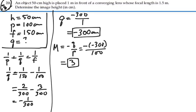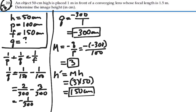So our image should be upright, and it will be 3 times larger than our object. In fact, our image height will equal the magnification times the object height. That's going to be 3 times 50, or 150 centimeters. So the height of the image is 150 centimeters.